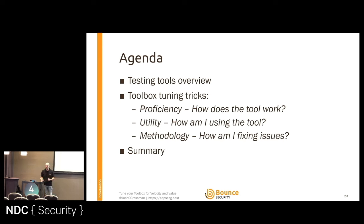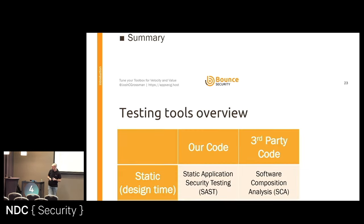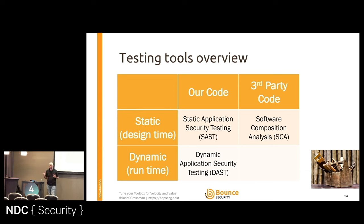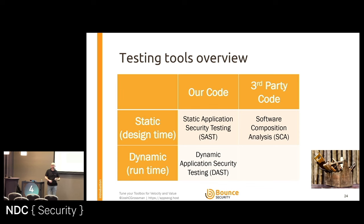The plan is to quickly go through what I mean when I talk about testing tools. I think about two axes. On one axis we're looking at our own code versus third-party code. On the other axis, we're doing this at design time — statically, while the code's on disk — or at runtime while the application is actually running. SAST, or Static Application Security Testing, scans our own code at coding time — it's scanning the code on disk.